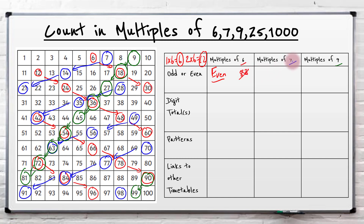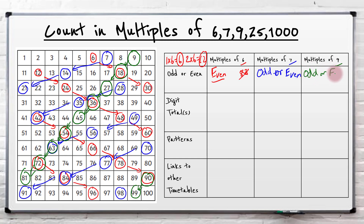So then let's look at multiples of 7. Now are they odd or are they even? Well there's 7, some end in 1's, end in 2, end in 3 - they could be odd or even. So that is a bit annoying. Now let's look at the multiples of 9 - are they odd or even? Odd, even, odd - again odd or even. So that's not going to help us much. So we've got even for 6, odd and even for 7, and odd and even for 9.